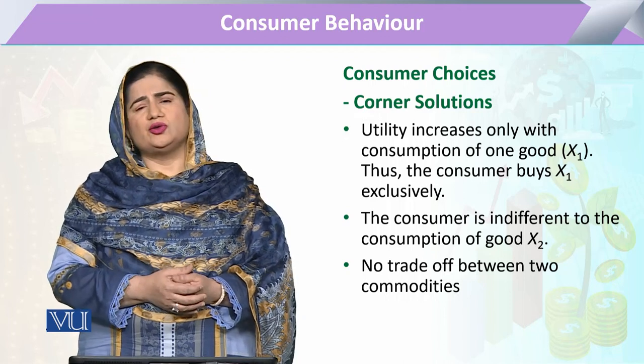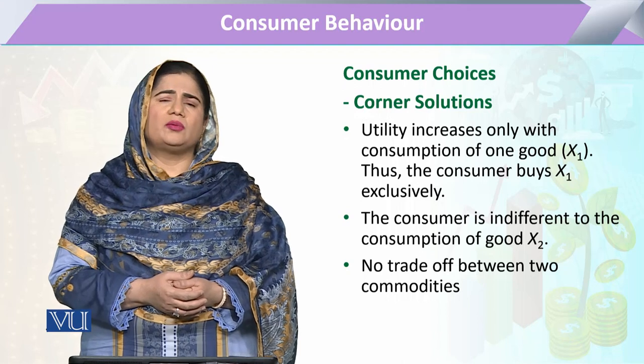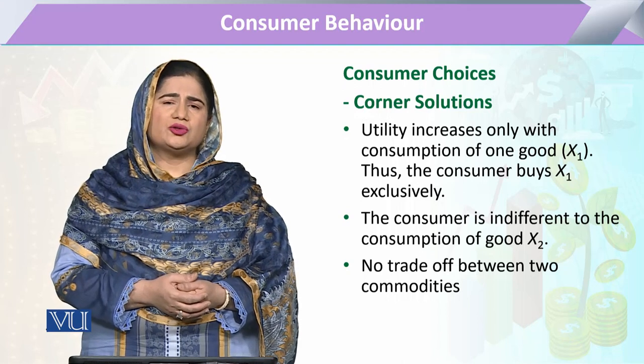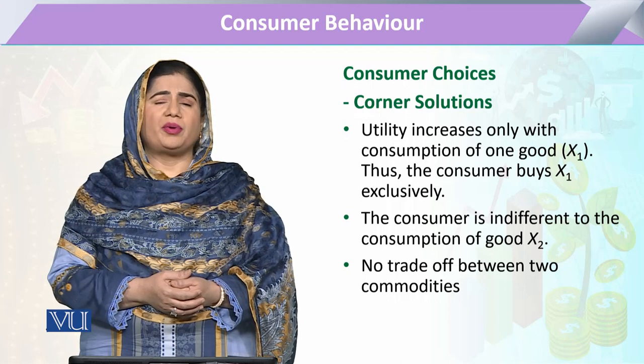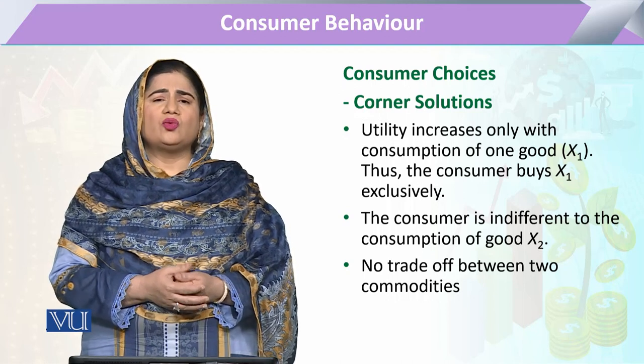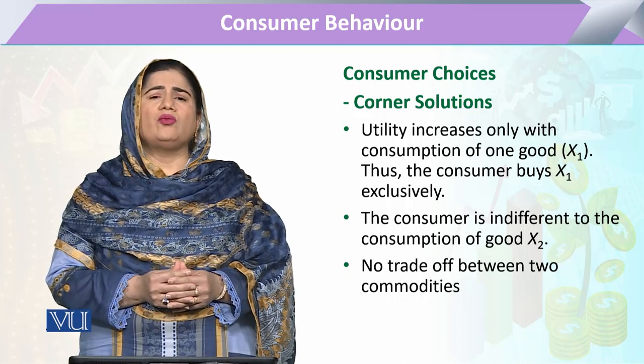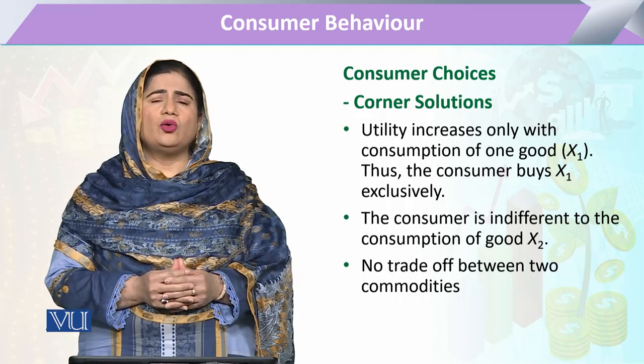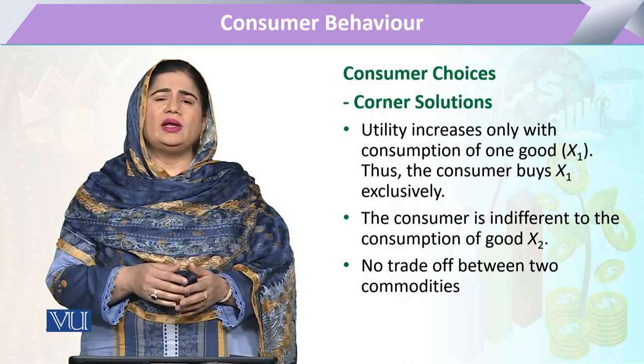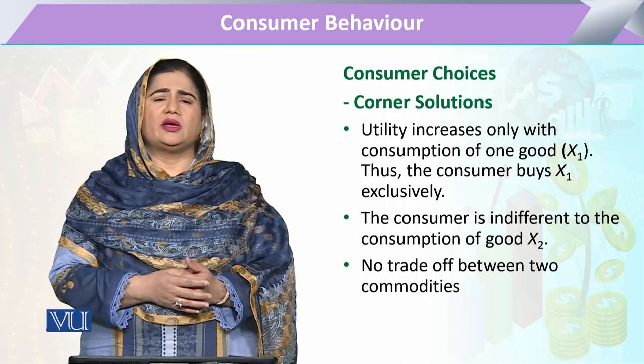If a consumer has two types of commodities X1 and X2, and the consumer has a particular preference for X1, then whatever amount of income he has or whatever the price of the commodities, he will go on purchasing only X1 from one indifference curve to the higher level of indifference curve.